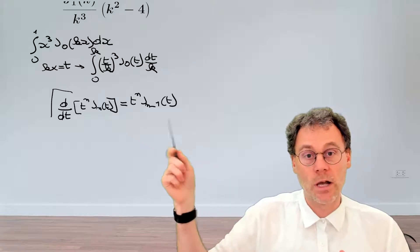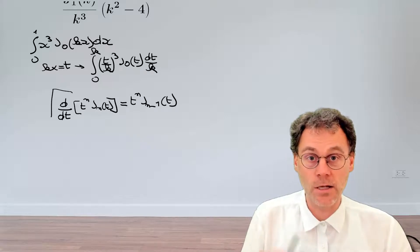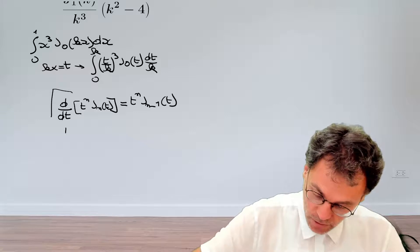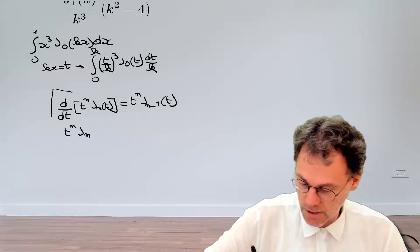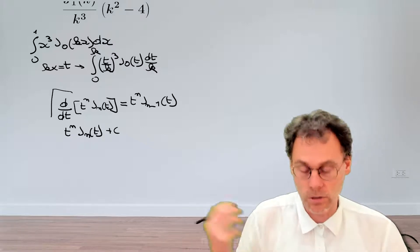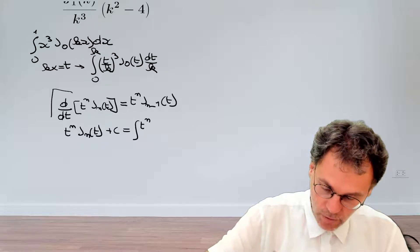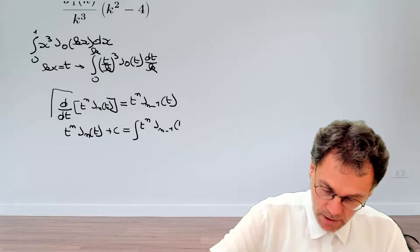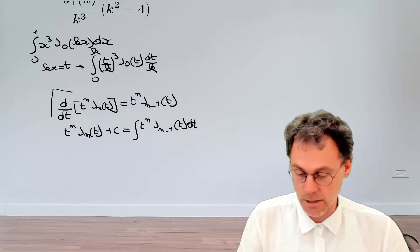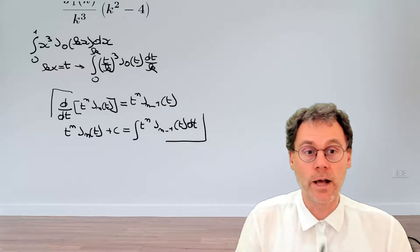So if we have an expression like this with a total derivative here on the left hand side, that's an expression that basically begs to be integrated. If we take the integral of both sides, we have t^n J_n(t) plus an integration constant. The integral t^n J_{n-1}(t) dt. So this is something that could be useful here. This is a general formula valid for any number of n.